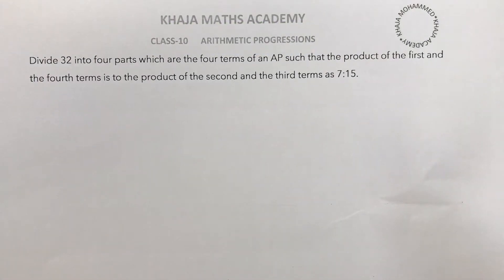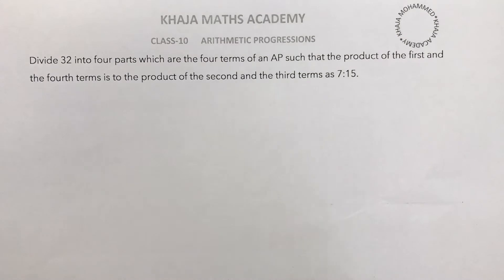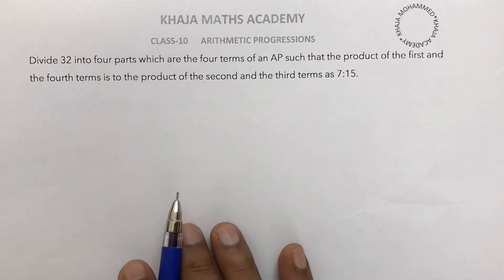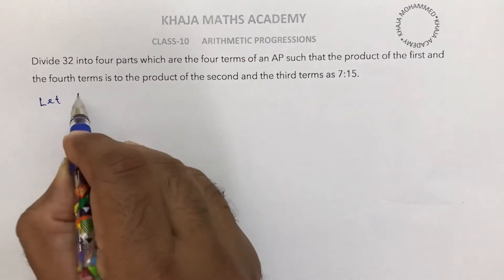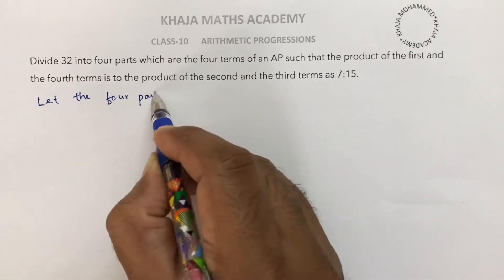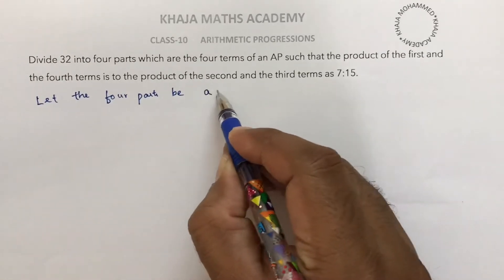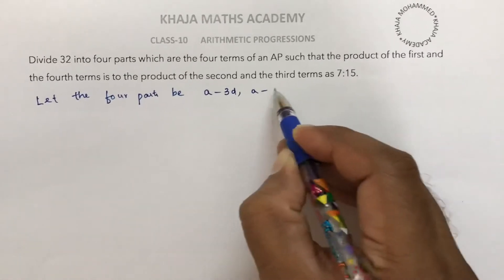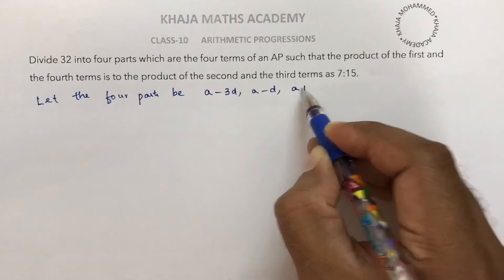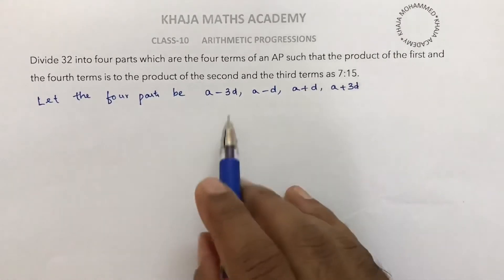Divide 32 into 4 parts which are the four terms of an AP, such that the product of the first and the fourth term is to the product of the second and third terms as 7 is to 15. Since there are four terms in AP, let the four parts be: a minus 3d, a minus d, a plus d, a plus 3d. Taking them in this way makes the problem easy.